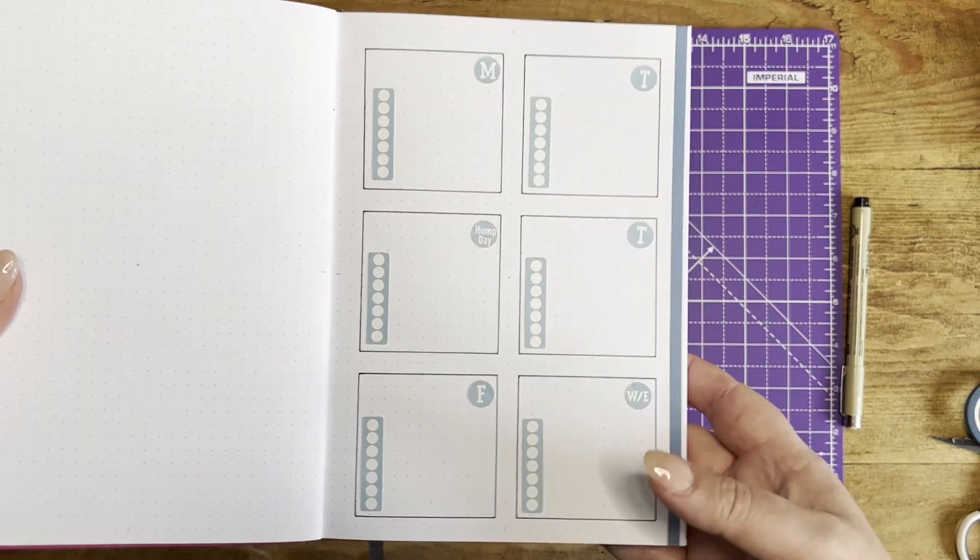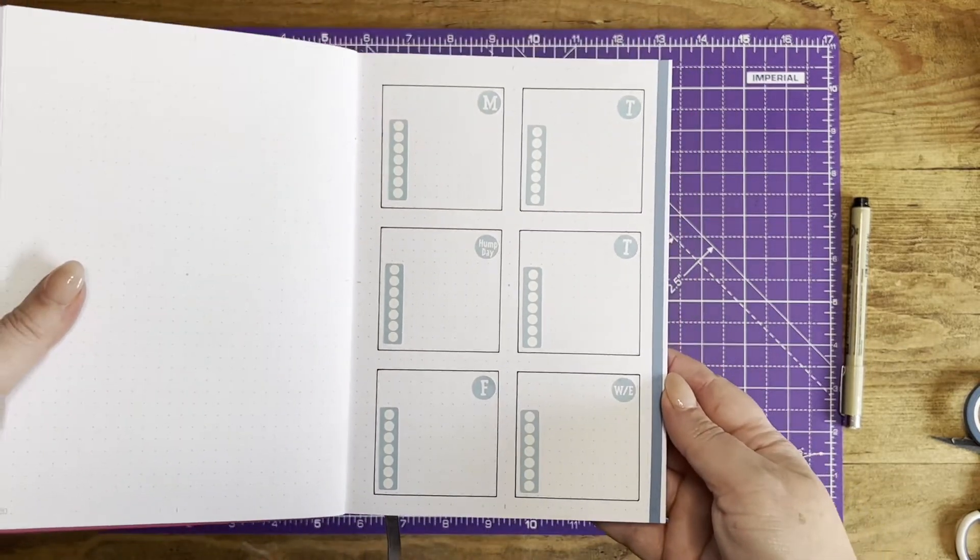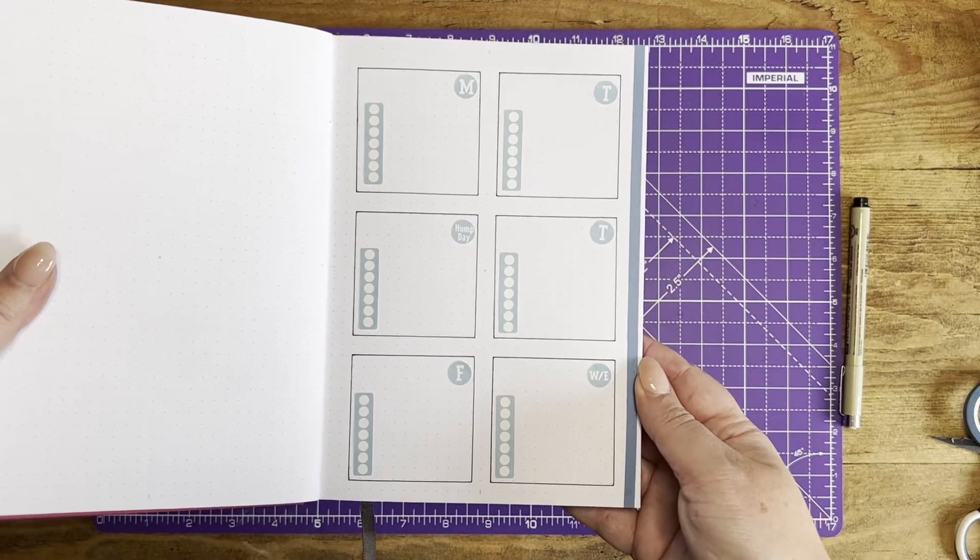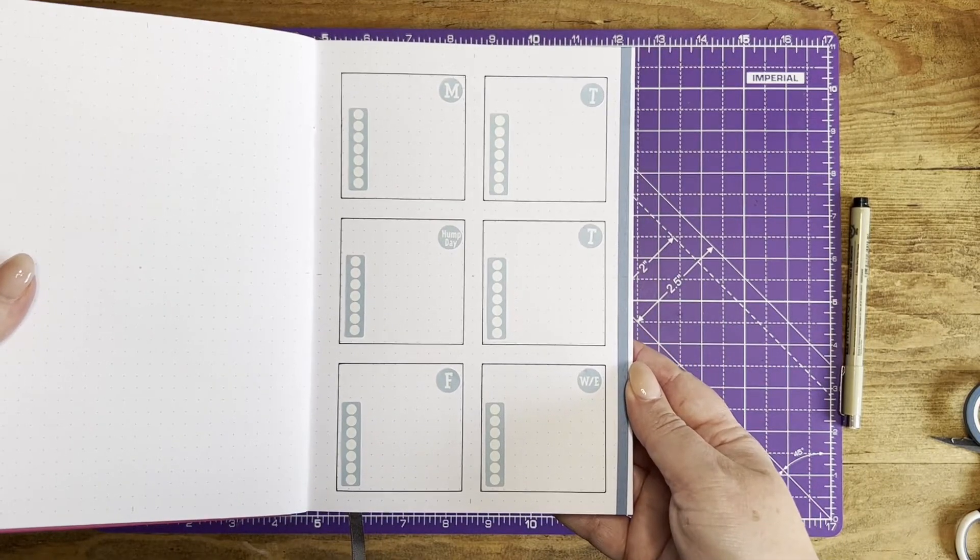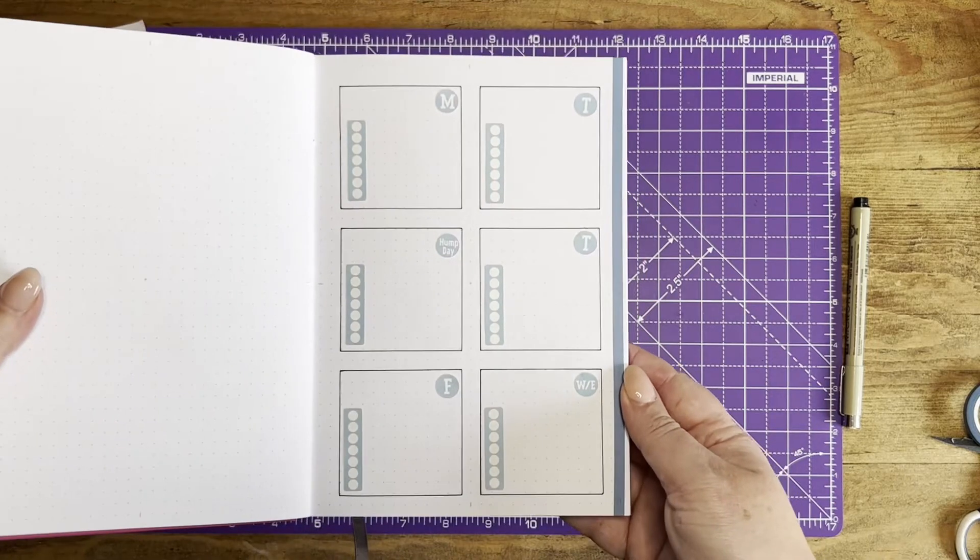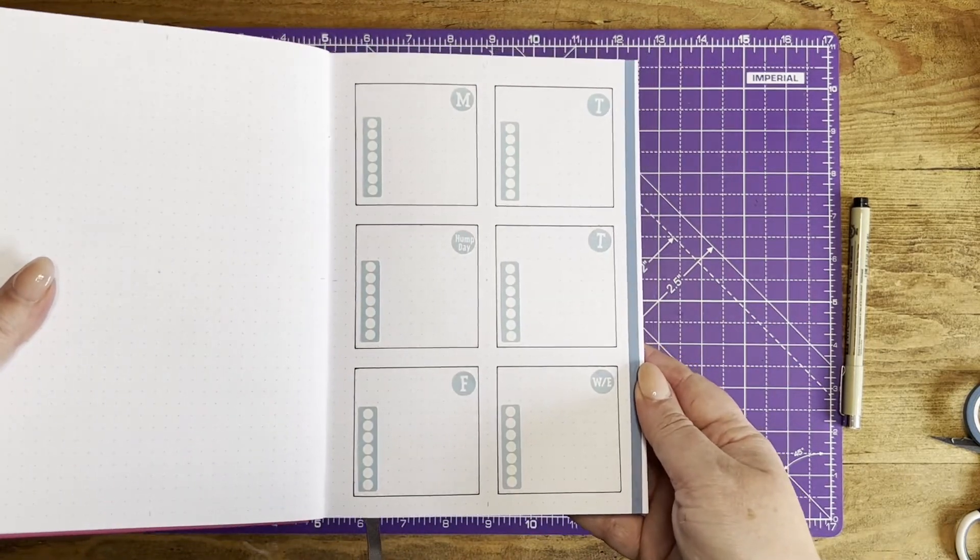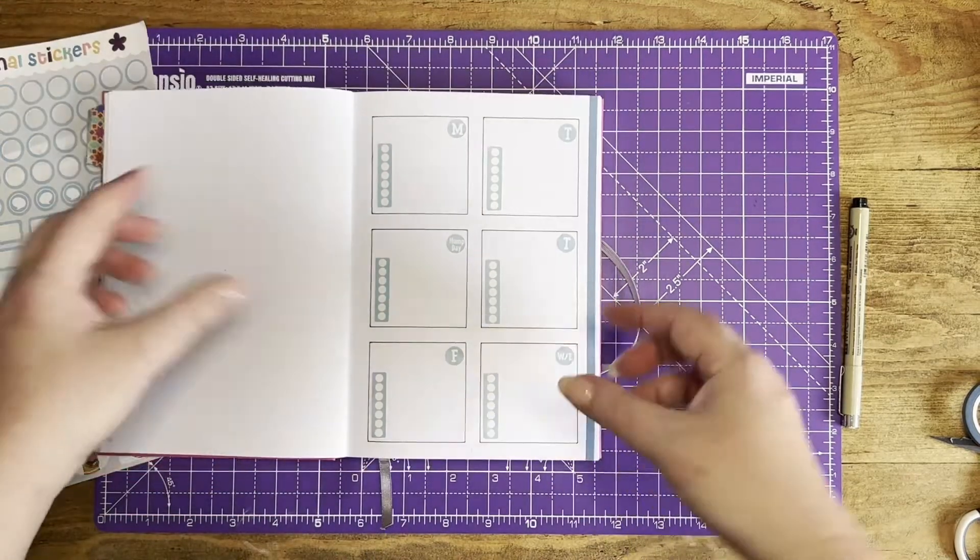Obviously, you can add stickers and more detail but that is a super easy, quick, weekly spread. It's three and a half minutes it's taken me to set that up and that includes me talking to you. So I don't think you can do any better than that one really. And it's good to go. Hope you enjoyed it.